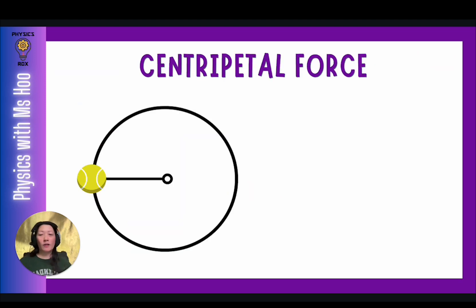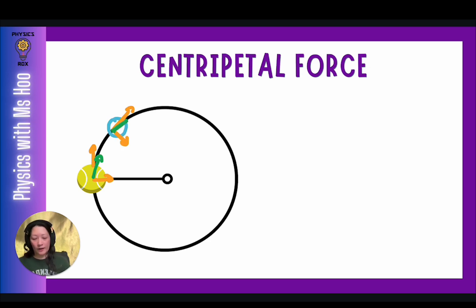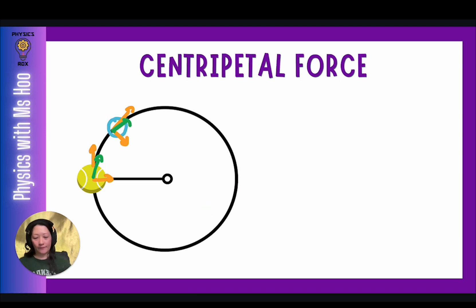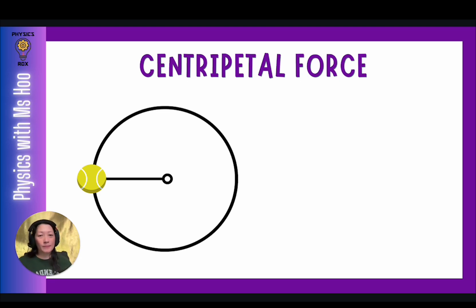When an object is moving in a circular manner, there is a constant application of forces that makes the object change direction throughout the entire circular path. For example, if the ball is at a point on the circle, it is actually traveling tangentially, and there is an inward force making the ball change direction constantly. To understand the entire circular motion, we need to know what forces are causing the object to move along the circular path — this is where we learn about centripetal force.